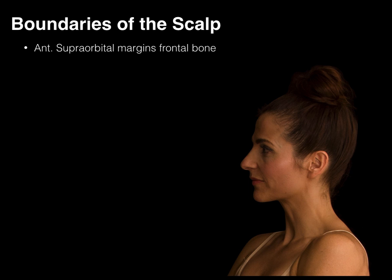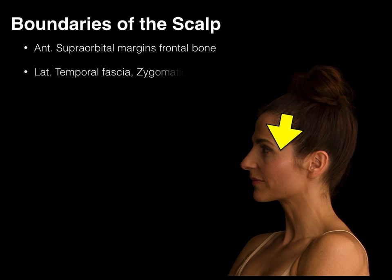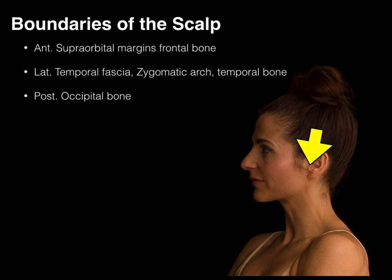The boundaries of the scalp are anteriorly through the supraorbital margins of the frontal bone, laterally through the temporal fascia which attaches along the zygomatic arch and temporal bone, and posteriorly through the occipital bone along the superior nuchal line and external occipital protuberance.